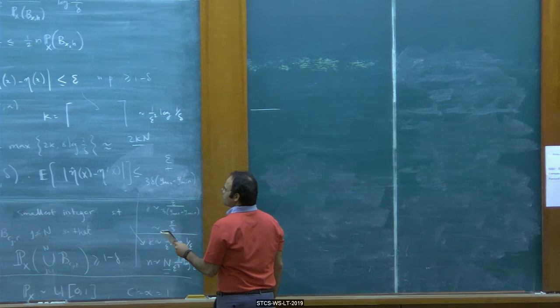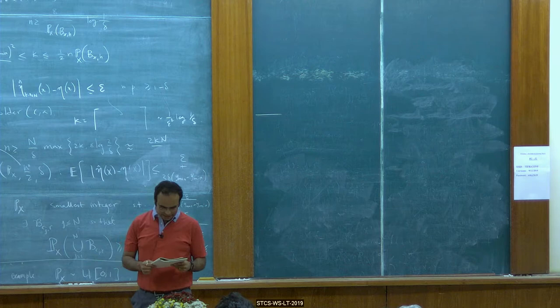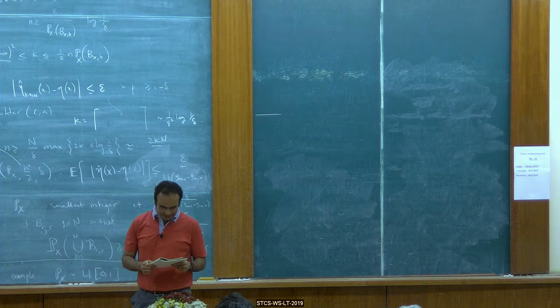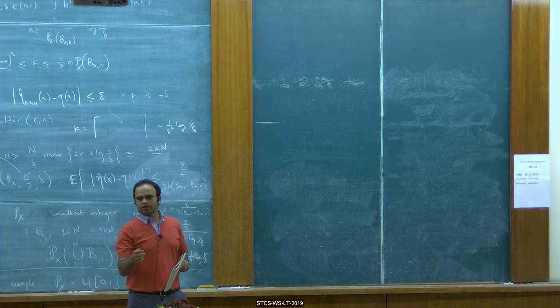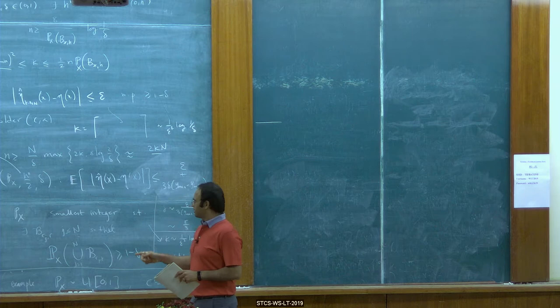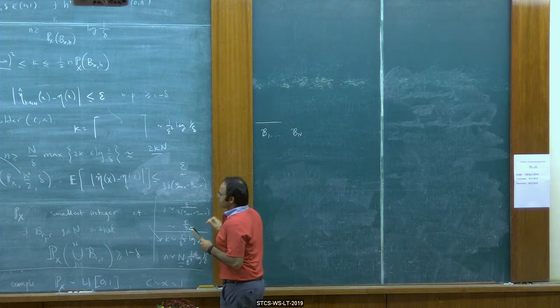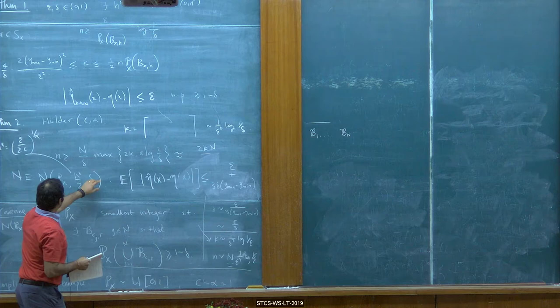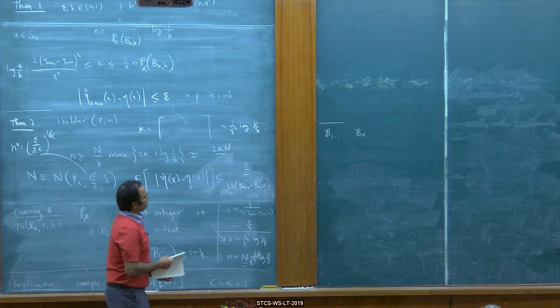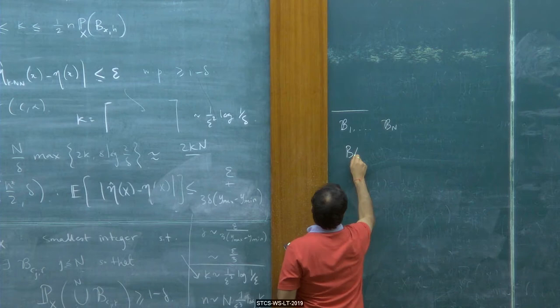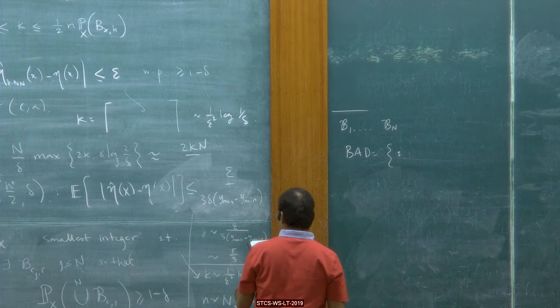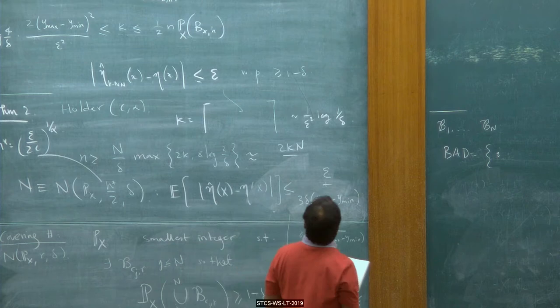Because we assume that X is Polish — and Polish means that all probability measures on it are tight — which means that for every probability measure, for every delta, you can find a compact set with at least 1 minus delta mass within it. Once you have a compact set, by definition you get a finite cover, which means the covering number is finite. Now assume that finite covering exists: you have balls B_1 through B_N, each of radius H, covering most of the mass. The bad covers are those with P_X(B_i) less than 8 over (N times log(1/delta)).